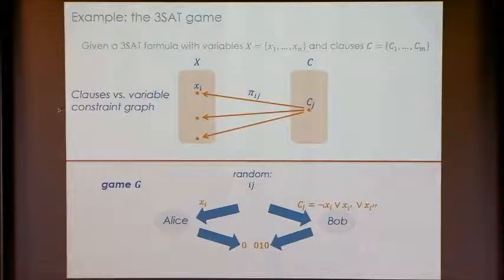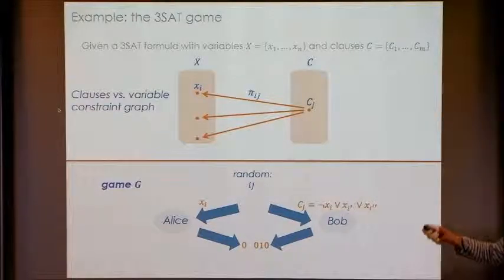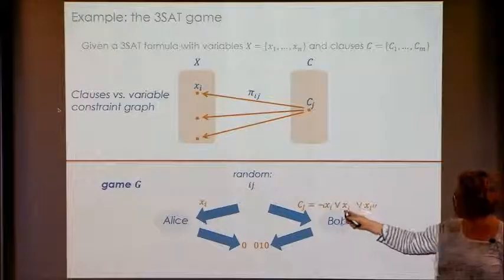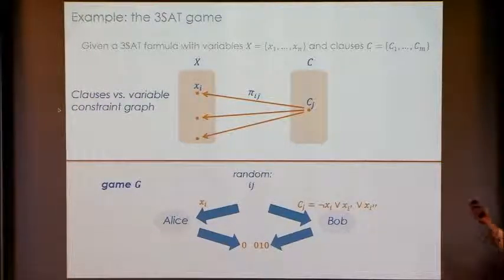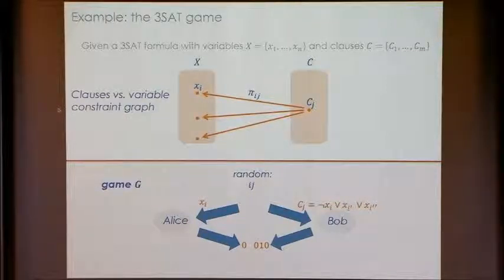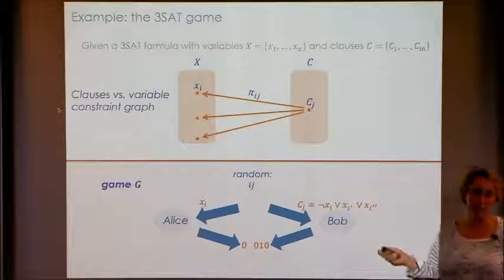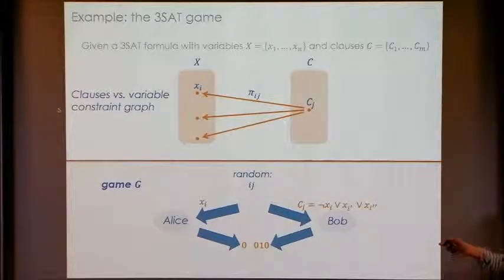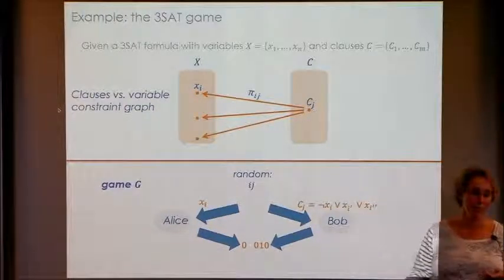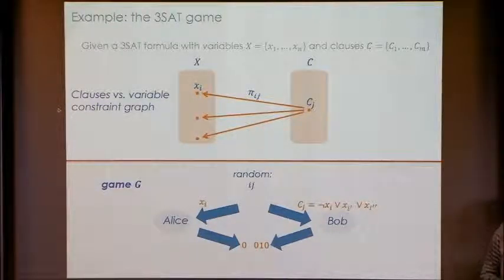It's easy to see that if the 3SAT formula has a satisfying assignment, the players have a perfect strategy: Alice uses the assignment for each xi, Bob uses it for every clause and wins with probability 1. Moreover, if 3SAT is unsatisfiable, they cannot win with probability 1 — no matter what strategy Alice uses, there will be some clause that's violated. Bob is in trouble on this clause: either he gives an unsatisfying value and loses immediately, or he gives a satisfying value that's inconsistent with at least one variable.